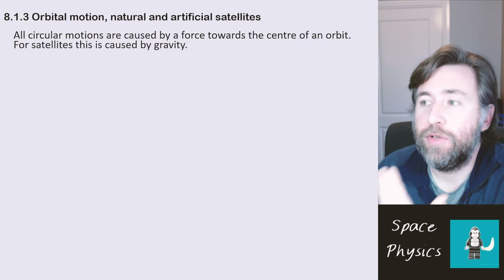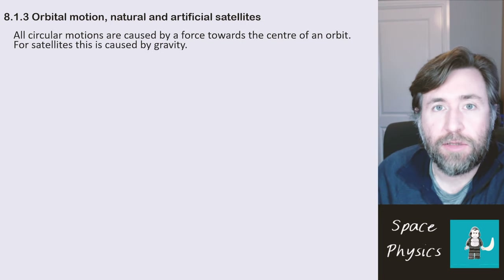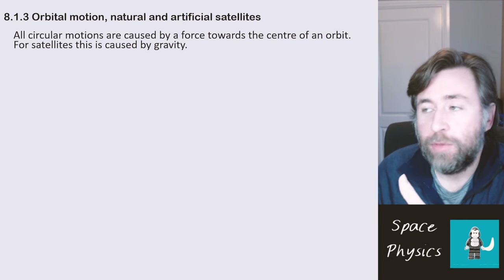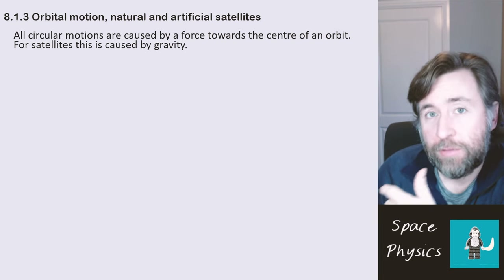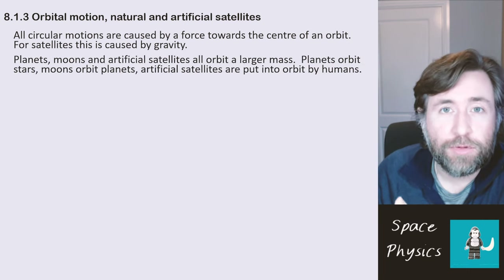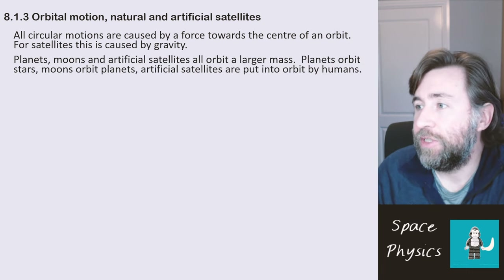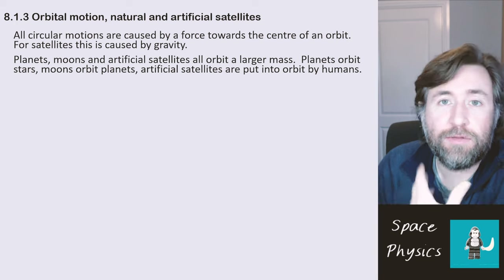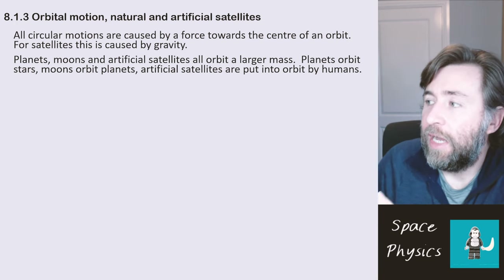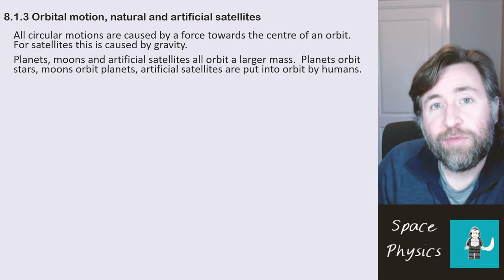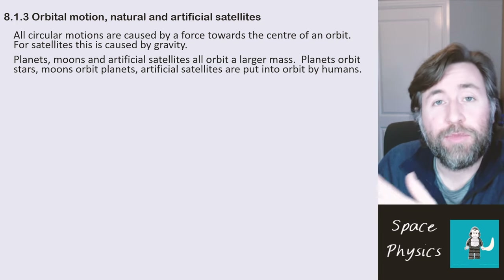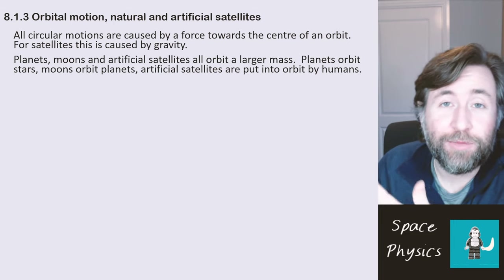A moon is an example of a natural satellite, and a satellite is just something which orbits a planet. Orbital motions are caused by a force inwards towards the centre of that orbit, and for satellites that force is caused by gravity. Planets are also satellites themselves — they're a satellite to stars. Moons are satellites to planets, and artificial satellites are ones that we've put into orbit ourselves. A satellite is always something with a smaller mass orbiting something with a larger mass.